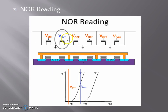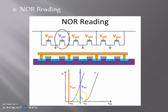In NOR reading, if we are interested in reading a specific transistor, we give an intermediate voltage to the gate of that transistor. We want the current reading of this transistor. At the same time, we want to block the current of all the other transistors, hence we give a low voltage V_off to all the other transistors. Depending upon the value of the current at this intermediate voltage, we decide whether the read value is 1 or 0.